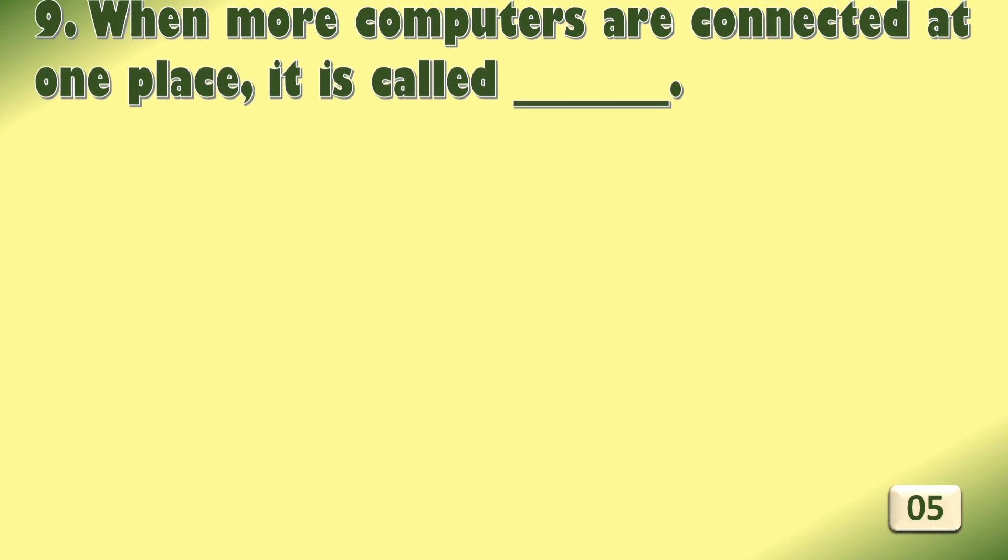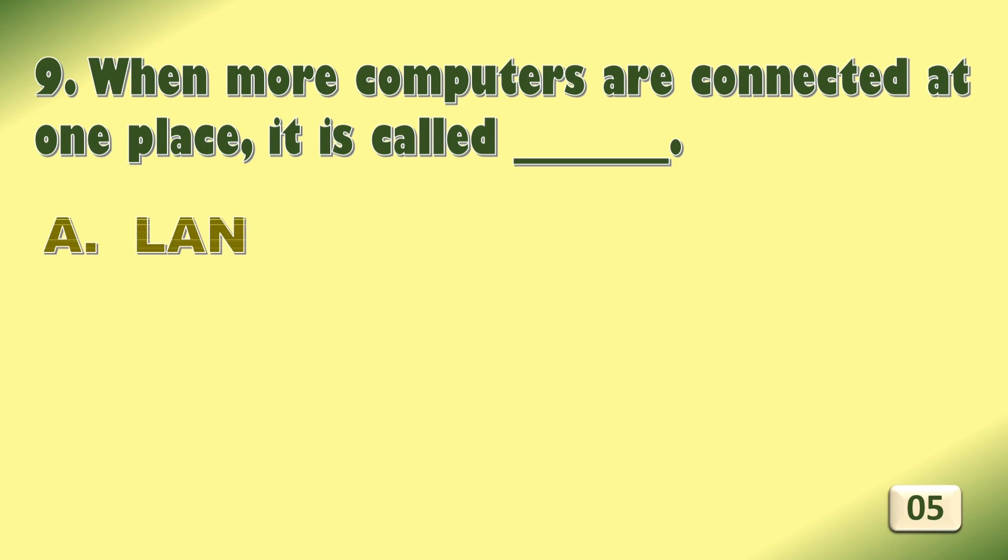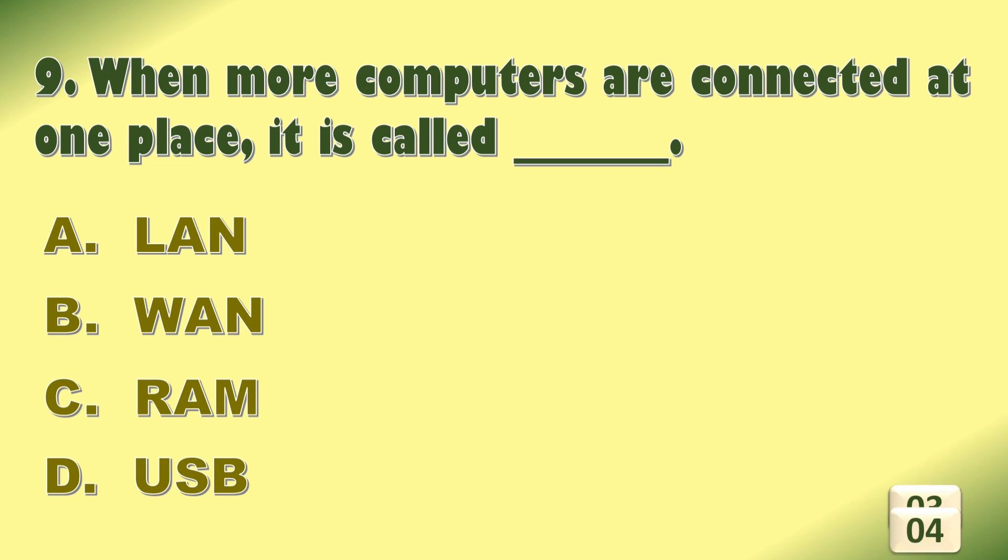When more computers are connected at one place, it is called Option A. LAN, B. WAN, Option C. RAM, or Option D. USB. The correct answer is L.A.N.